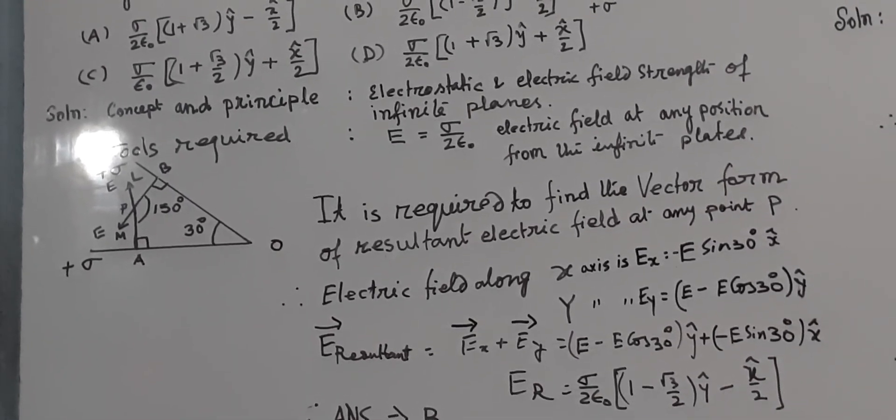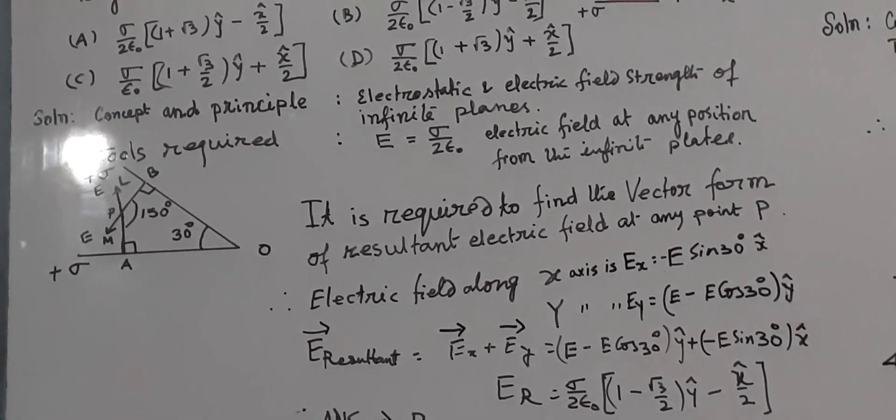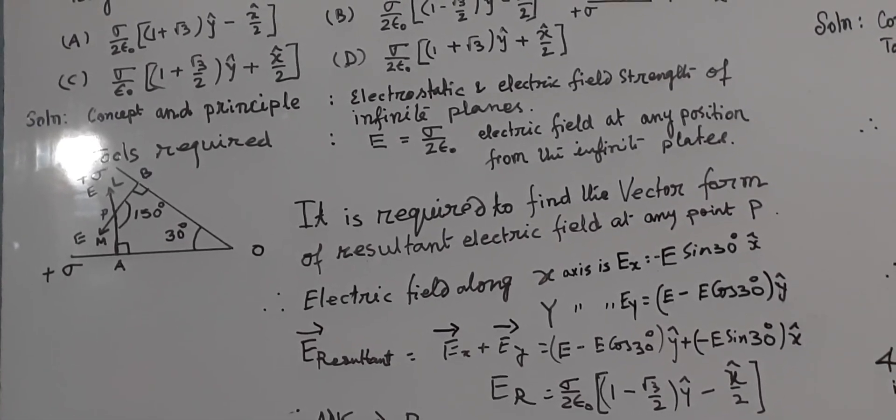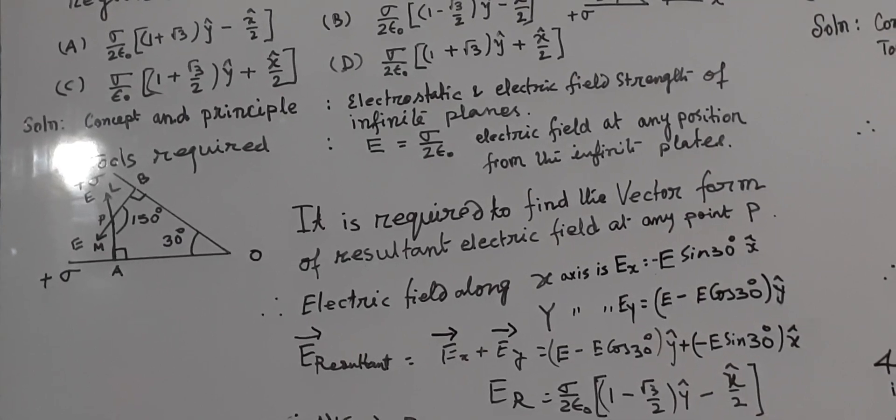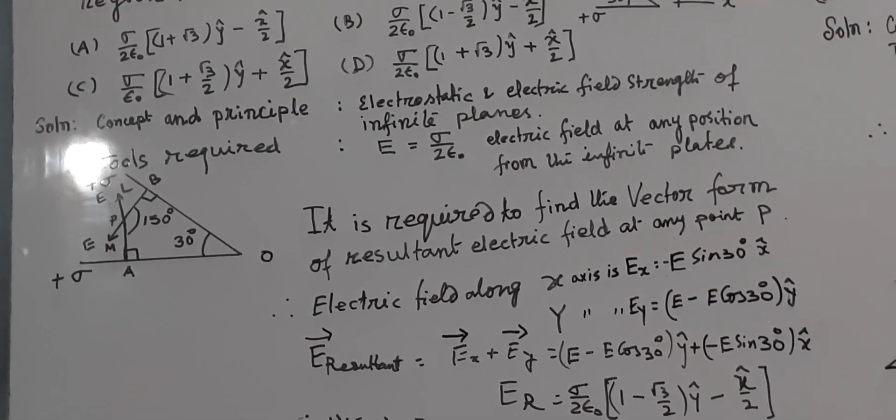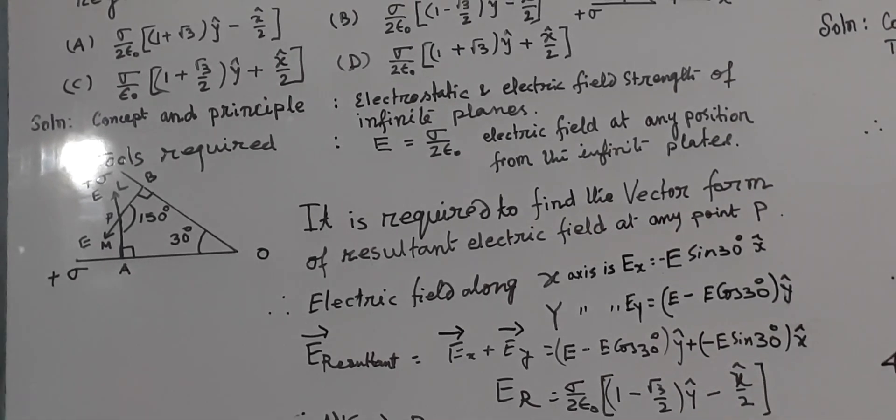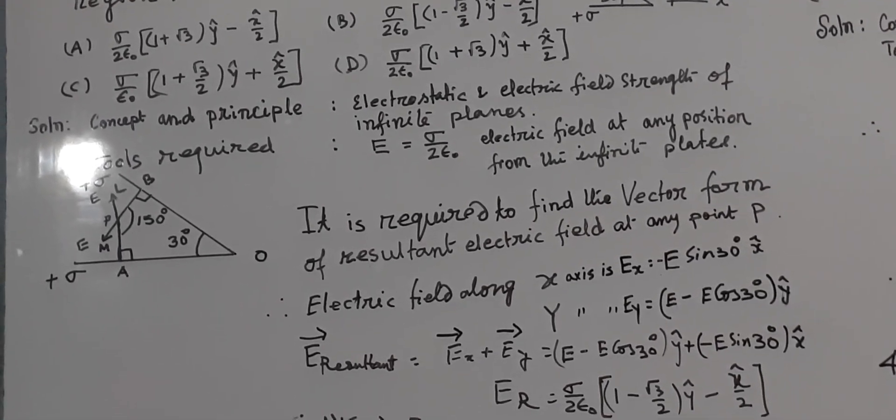Now, for solution, we have to see concept and principles, that is, electrostatic and electric field strength for infinite planes. And tools required, mainly, E equal to sigma by twice epsilon naught for infinite plate, this is the electric field and it remains constant.